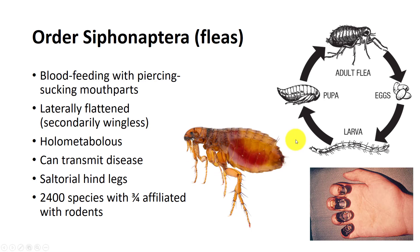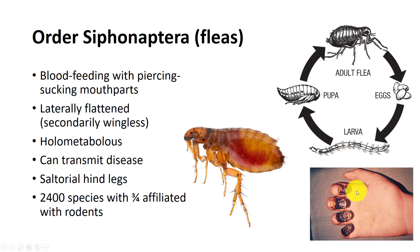Fleas are holometabolous, and only adults feed on blood, with the larvae feeding on organic matter. The oriental rat flea is a plague vector. The bubonic plague was the most common form of the Black Death. The mortality was close to 100%. Even today, there is no treatment. Symptoms are high fever and skin turning deep shades of purple due to disseminated intravascular coagulation.